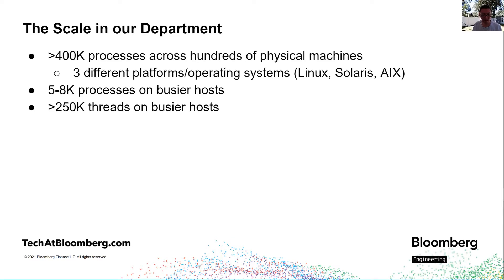Just to give you an idea of the scale our department runs on: we run across three different OS platforms, a total of over 400,000 processes across hundreds of physical machines. On some of the busier hosts, 5,000 to 8,000 processes, and on the busiest hosts, over 250,000 threads.